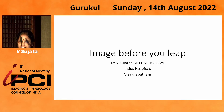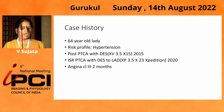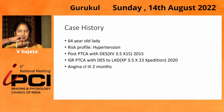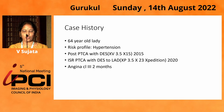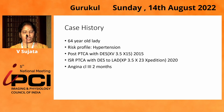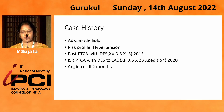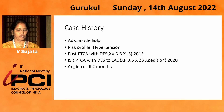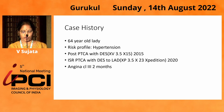I would like to share my case. I had a 64-year-old lady with a risk profile: she's hypertensive, post-PTCA with DES in 2015, a 3.5x15 stent in 2015. The patient had an ISR, and again a PTCA with DES was done with the same EES eluting stent — Zansprime 3.5x23 in 2020 at another center. She presented with angina class 3 of 2 months duration.